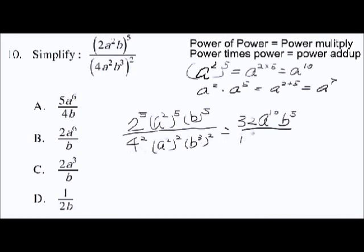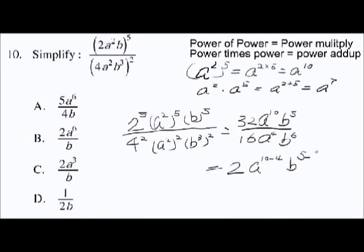In the denominator: 4 squared equals 16; a squared squared — power of the power — gives a to the fourth; and b cubed to the power of 2 gives b to the sixth. Now dividing, we subtract the powers: 32 over 16 equals 2; a to the 10 divided by a to the 4 gives a to the power of 10 minus 4; and b to the 5 minus 6 gives b to the power of negative 1. So we get 2 times a to the power of 6 times b to the power of negative 1.